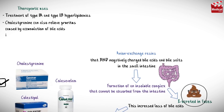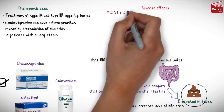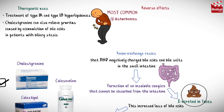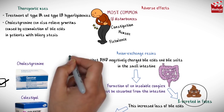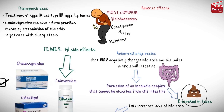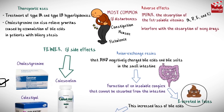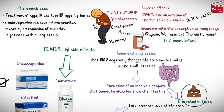Cholestyramine can also relieve pruritus caused by accumulation of bile acids in patients with biliary stasis. The most common side effects are gastrointestinal disturbances such as constipation, nausea, and flatulence. Colesevelam has fewer gastrointestinal side effects than other agents. These drugs may impair the absorption of fat-soluble vitamins, and they also interfere with the absorption of many drugs such as digoxin, warfarin, and thyroid hormone. So other drugs should be taken at least one to two hours before or four to six hours after the bile acid binding resins.